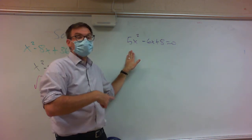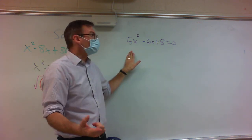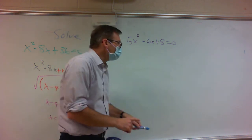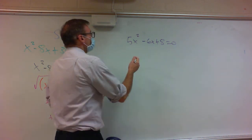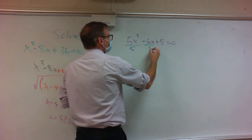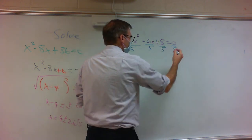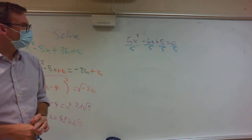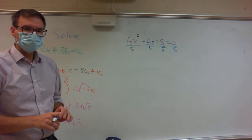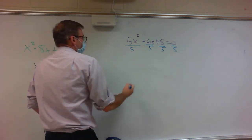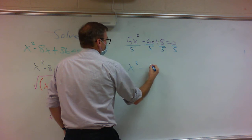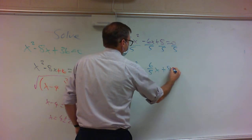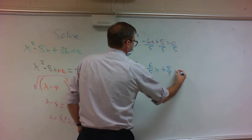So the next question is: what do you do? Well, you make it a 1. How do you make it a 1? We're going to divide everything by 5. That gives me x squared minus 6 over 5x plus 8 over 5 equals 0.